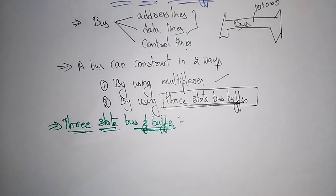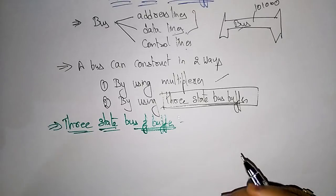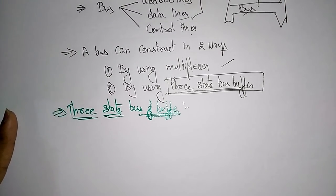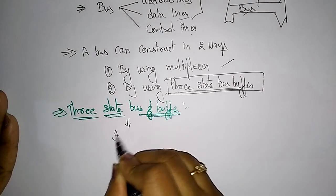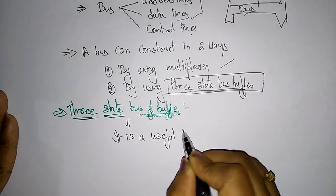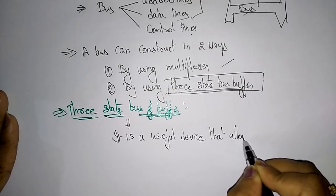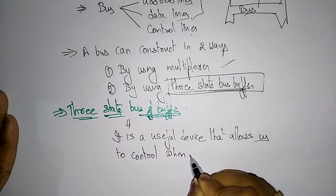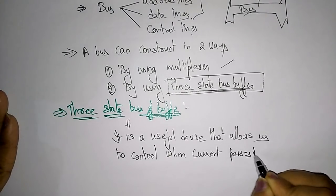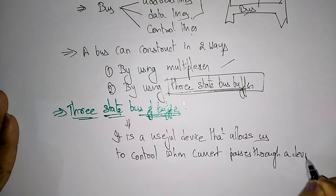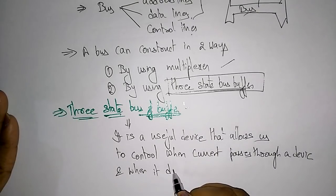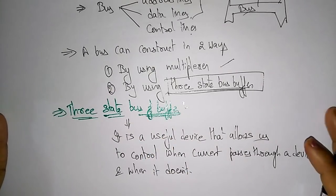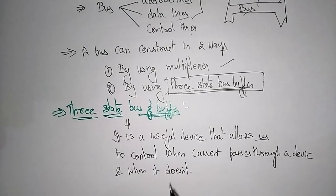A bus system can also be constructed using the three-state bus buffer. A three-state bus buffer is a useful device that allows us to control when current passes through a device and when it does not. The main use of this three-state bus buffer is that it controls and monitors when the current passes through the device or when it does not pass.